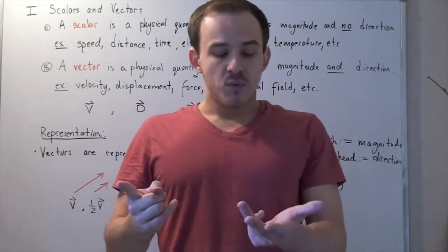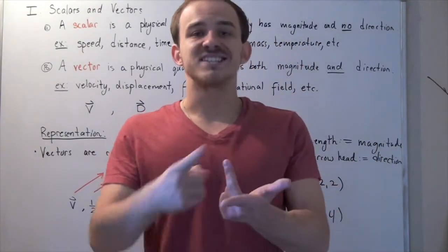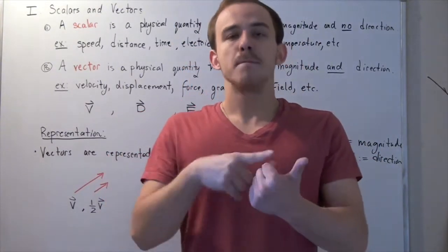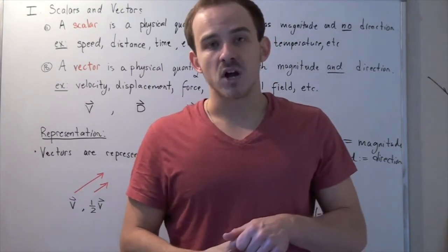we can describe our car using these physical quantities. For example, we can talk about the velocity of our car, the speed of our car, the acceleration of our car, the mass of our car, the temperature of our car, the momentum of our car.